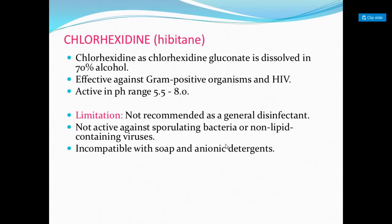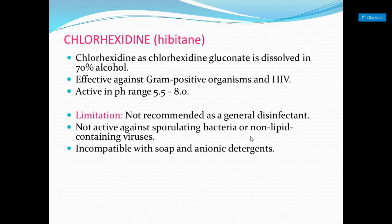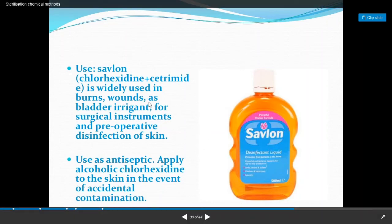Chlorhexidine gluconate is dissolved in 70% alcohol and is effective against gram-positive organisms and HIV. The active pH range is 5.5–8. Limitations: not recommended as a general disinfectant, not active against spore-forming bacteria or non-lipid-containing viruses. Savlon contains chlorhexidine and cetrimide and is used for burns, wounds, as a bladder irrigant, for surgical instruments, and for pre-operative disinfection of skin.